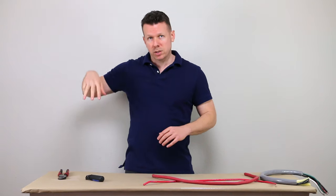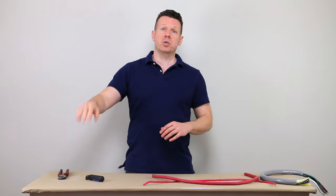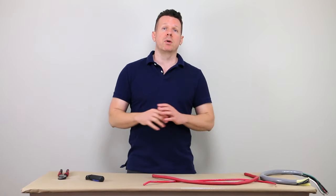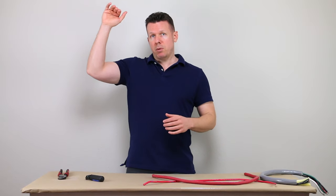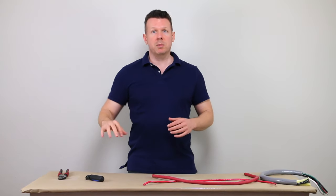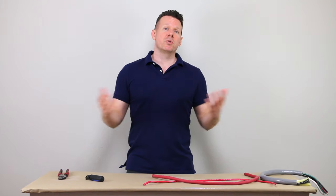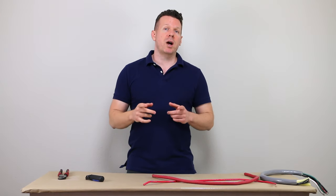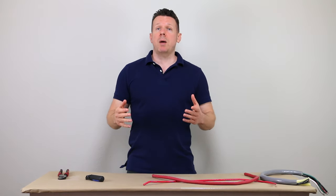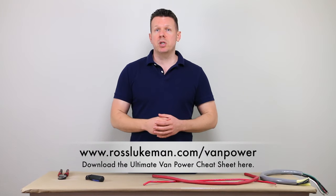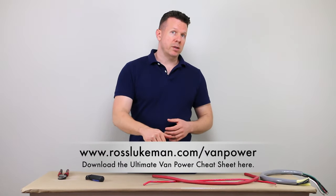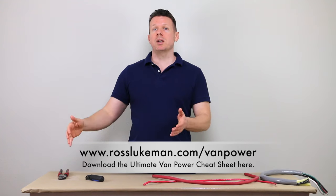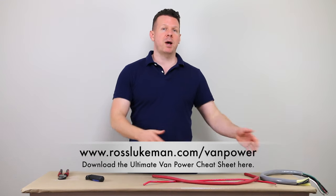For instance, how does the alternator power come through the system and end up charging your cell phone? It's a really illuminating diagram that I think you'll find useful. To grab your own copy of the Ultimate Van Power Cheat Sheet, all you need to do is click the link below or go to rosslukeman.com slash van power.